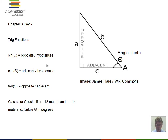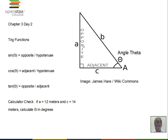Hopefully you are somewhat familiar that there are sine, cosine, and tangent functions of some angle theta. In this diagram, vertex A has the angle theta. We have side A (one short side), side C (the other short side), and side B (the hypotenuse). Sine theta equals the opposite side divided by hypotenuse; cosine theta equals the adjacent side divided by hypotenuse; tangent equals opposite divided by adjacent.